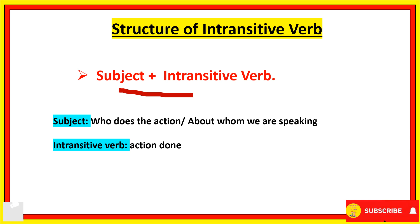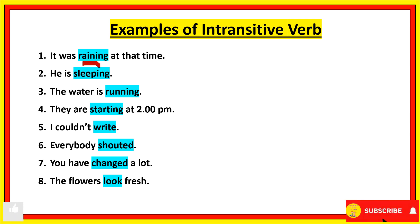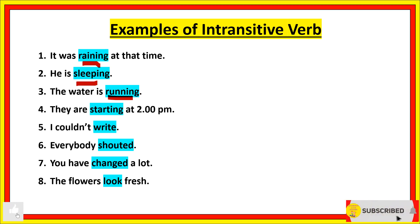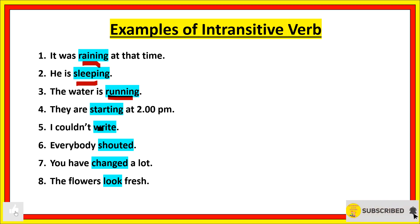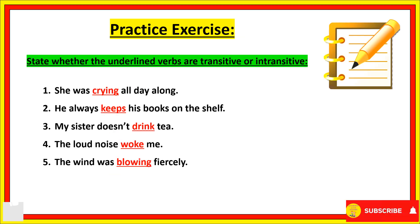Examples of intransitive verbs: 'It was raining at that time' — no object follows the verb 'raining.' Similarly, 'He is sleeping' — no object is mentioned. 'The water is running' — again, no object follows the verb. 'I couldn't write' — what I couldn't write is not mentioned; the verb stands on its own. These verbs are complete without an object.